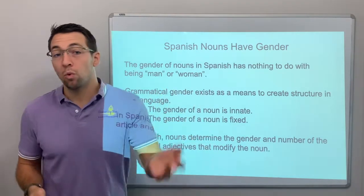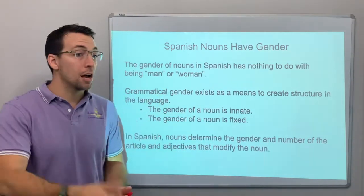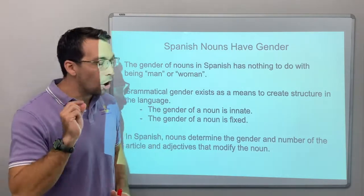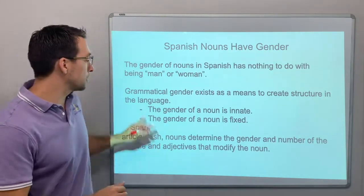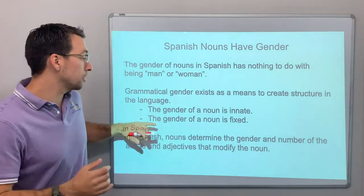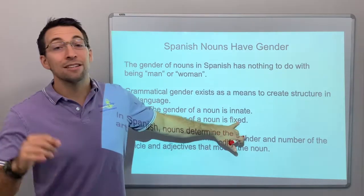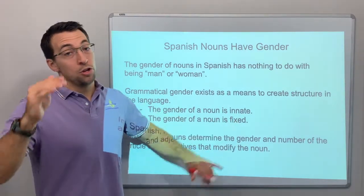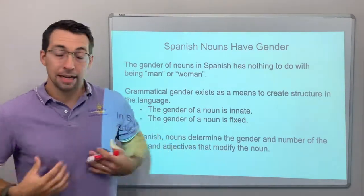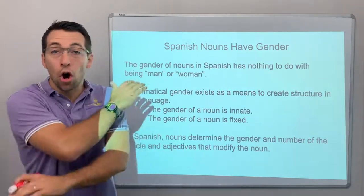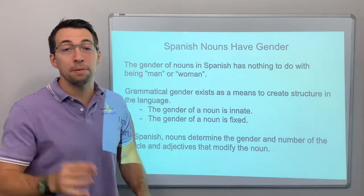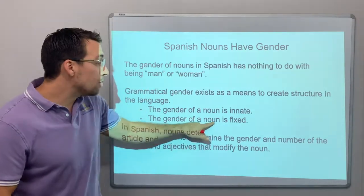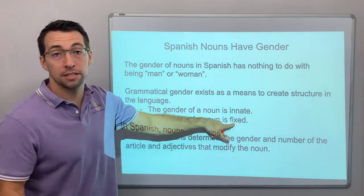Everything has a gender in Spanish — a bridge, a wall, a cup — all have a gender, only for the purpose of creating structure in the language. The gender of a noun is fixed. 'Camisa' is always feminine, period, no matter what. Nouns have fixed gender.